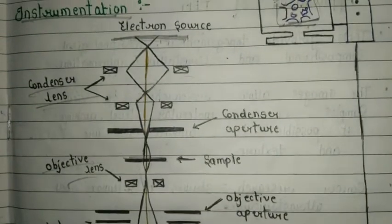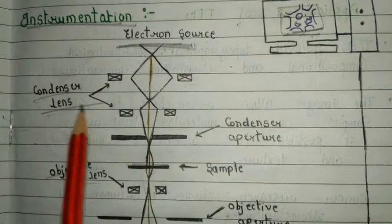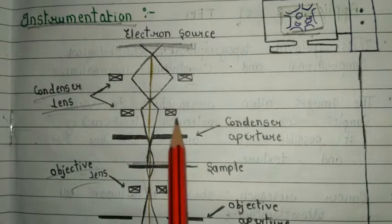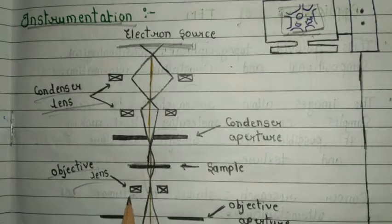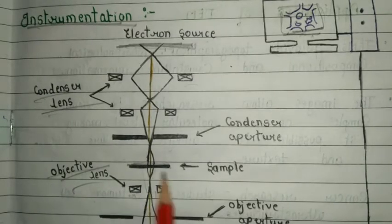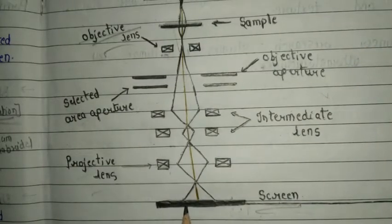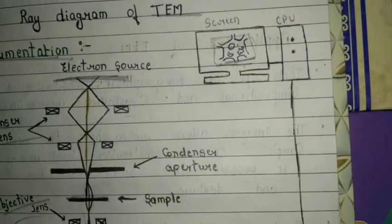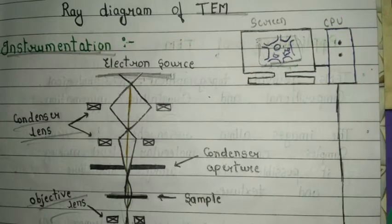To summarize the instrumentation from the diagram: the electron gun produces the electron beam (shown in yellow). The condenser lens focuses the electron beam toward the specimen or sample. The objective lens focuses the beam to the projector lens. After the projector lens, data is collected on the fluorescence screen and displayed as a highly magnified image on the computer screen.